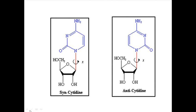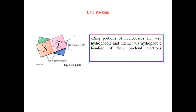The N-glycosidic linkage is not fixed — it can rotate to make either the syn or anti orientation. It depends on the situation: when the environment or conditions demand it, the DNA can adopt syn or anti orientation of the bases accordingly.